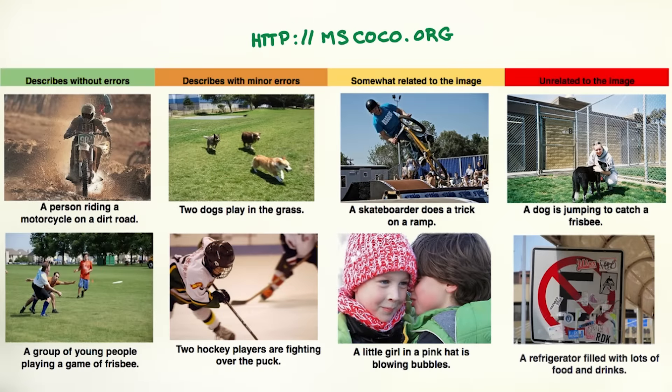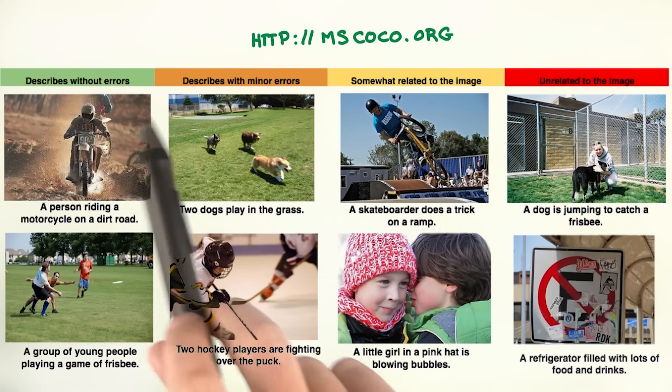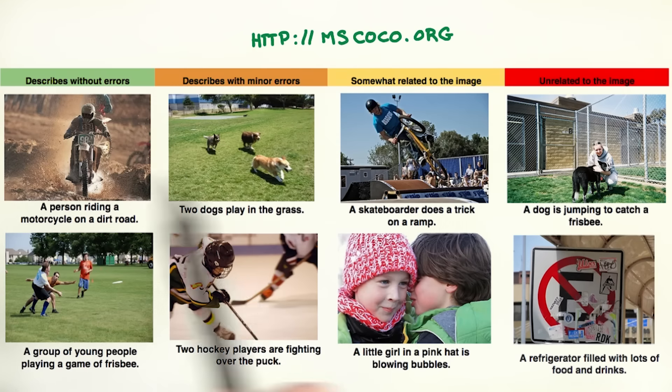To do that, you need training images and captions. There are a few data sets out there that you can use for that. Most notably, the Cocoa data set. It has images and crowd-sourced captions for them. You can train a model that uses a ConvNet to analyze the image and generate captions from them. And it works.